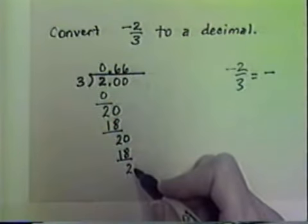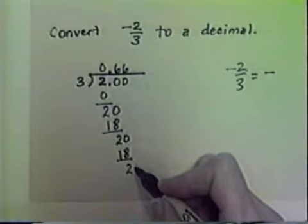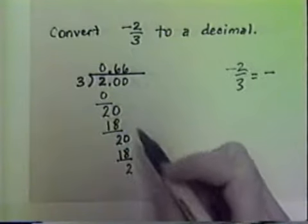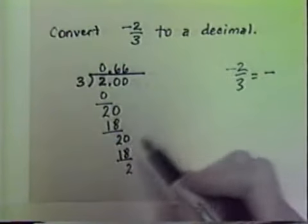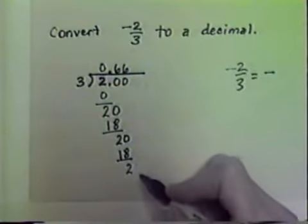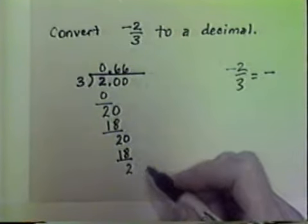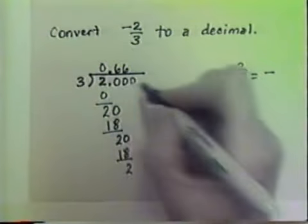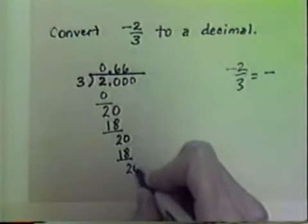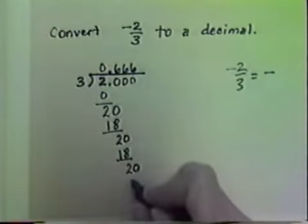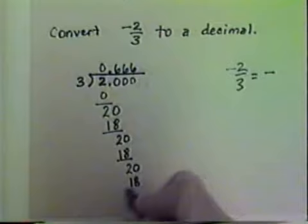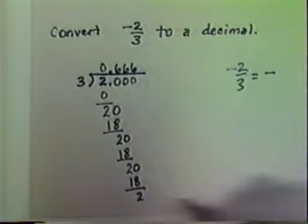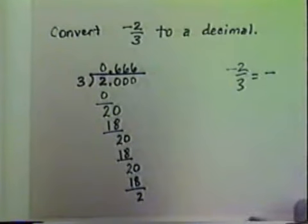By affixing the next zero and bringing it down, we'll have twenty yet again. And so we keep dividing three into twenty over and over again. Let's do one more just to illustrate this. Six times three is eighteen. Still the remainder is two — it's going to continue the same way forever and ever.